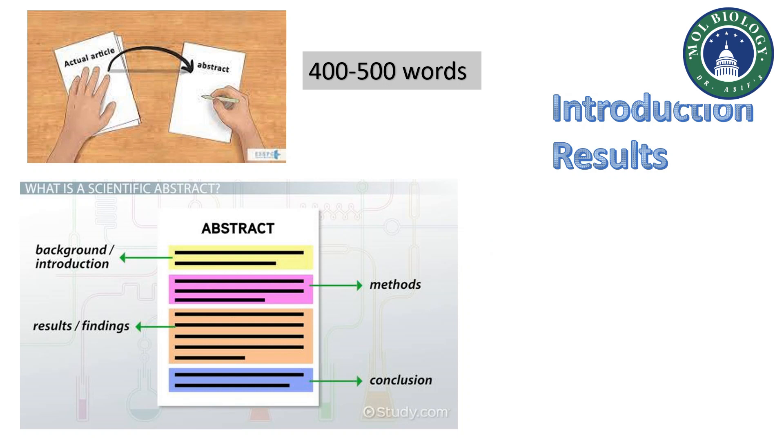Then you specifically tell about the results. For this example, results can be like how you identified some mutants, how you identified their phenotype, and how the genes controlling rice blast differ. You can explain those results in three to four lines.